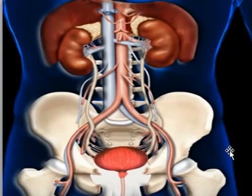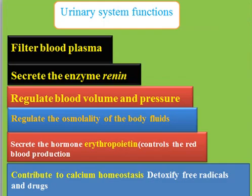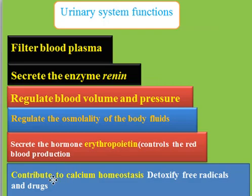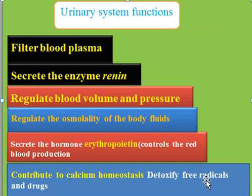The urinary system has many functions. First, filtration of the blood. Second, it secretes the enzyme called renin. Third, it regulates blood volume and blood pressure. Fourth, it regulates the osmolality of body fluids. Fifth, it secretes hormones like erythropoietin, which controls red blood cell production, and it contributes to calcium homeostasis. Finally, it detoxifies free radicals and drugs.